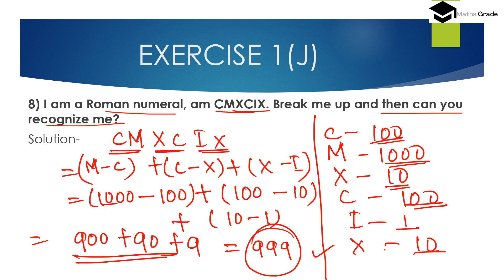So the Roman numeral CMXCIX, when broken up, gives us the Hindu-Arabic numeral 999. CMXCIX has the value 999.